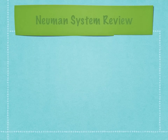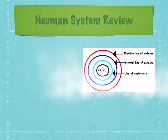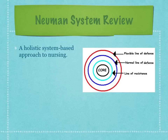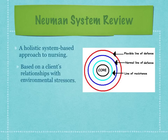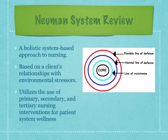The Neuman Systems Model is a holistic, system-based approach to nursing. It is based on the client's relationship with environmental stressors and utilizes primary, secondary, and tertiary nursing interventions for patient system wellness.